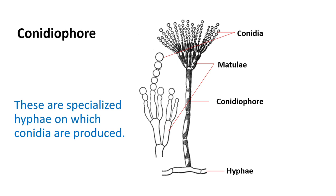Conidiophores are specialized hyphae on which conidia are produced. Here you can see the structure: this is hyphae, and this is a specialized conidiophore growing out of the hyphae, bearing conidia on its top. These are fruiting bodies that contain conidia, or conidiospores.